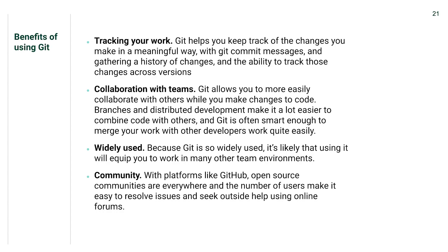To wrap up, here are the benefits of using Git. It's great for tracking your work — Git helps you keep track of the changes you make in a meaningful way with commit messages and a history of those changes across versions. Git also allows you to collaborate really easily with teams — creating branches and building with distributed development make it a lot easier to combine code with others, and Git is often smart enough to merge your work with other developers' work quite easily. Finally, Git is really widely used and has a huge community. Using it will equip you to work in many other team environments, and the large community on platforms like GitHub makes it easy to resolve issues and seek outside help when troubleshooting.